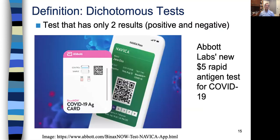The next definition is dichotomous tests — those are tests that have only two results, and that's what we're going to talk about today. When Michael Cohn talks about Prediction Two, he'll talk about multi-level tests and continuous tests that can have many more than two results. Here's an example of a dichotomous test — this has been in the news.